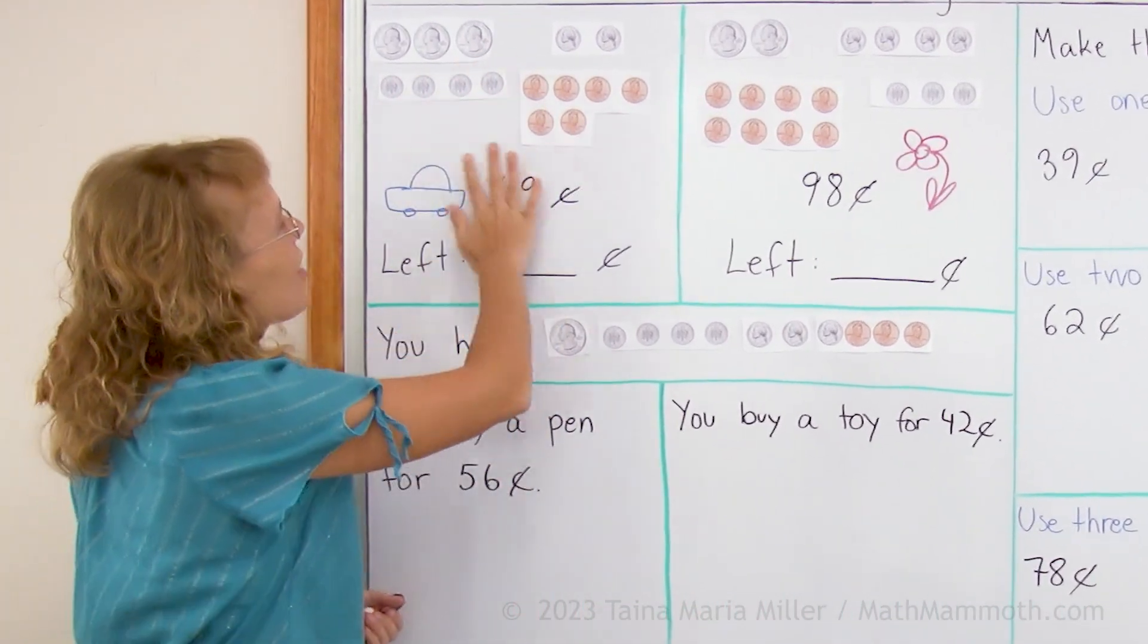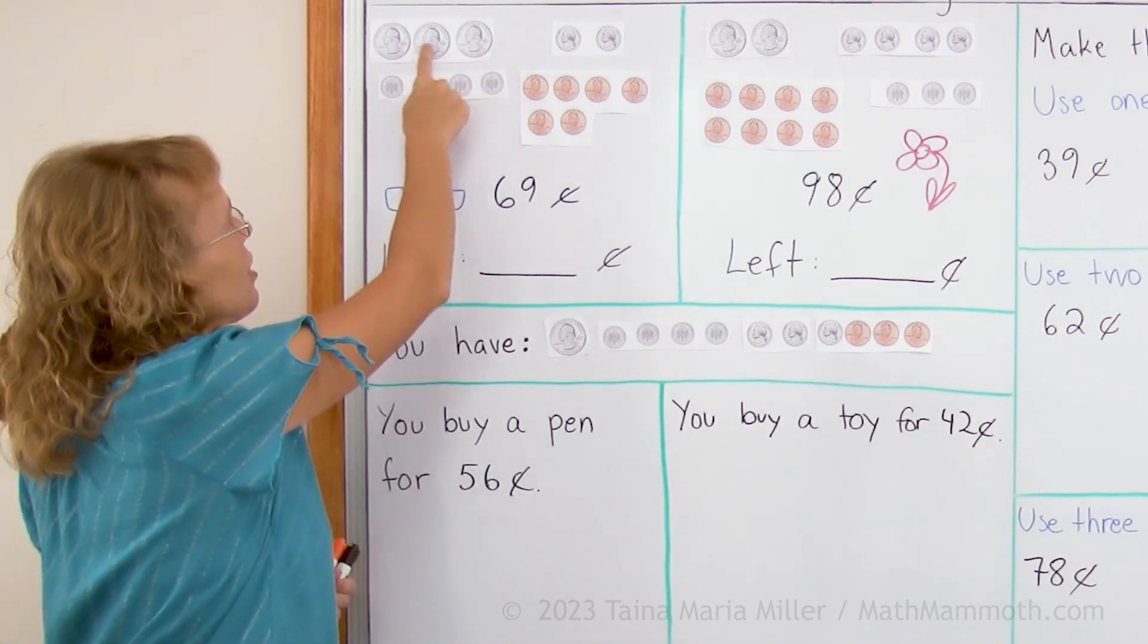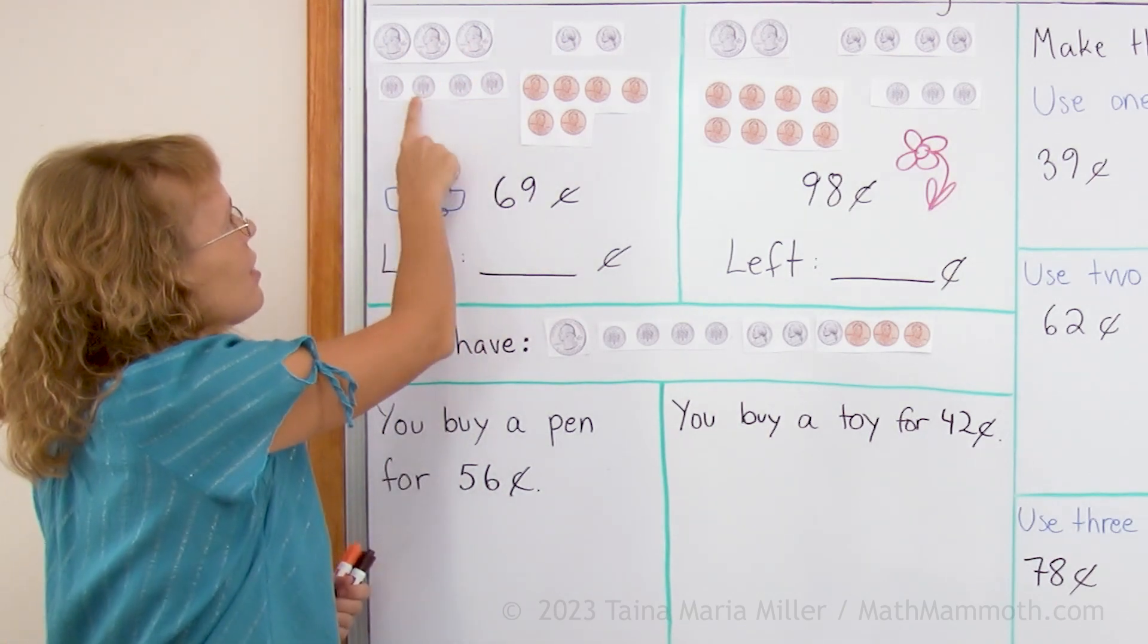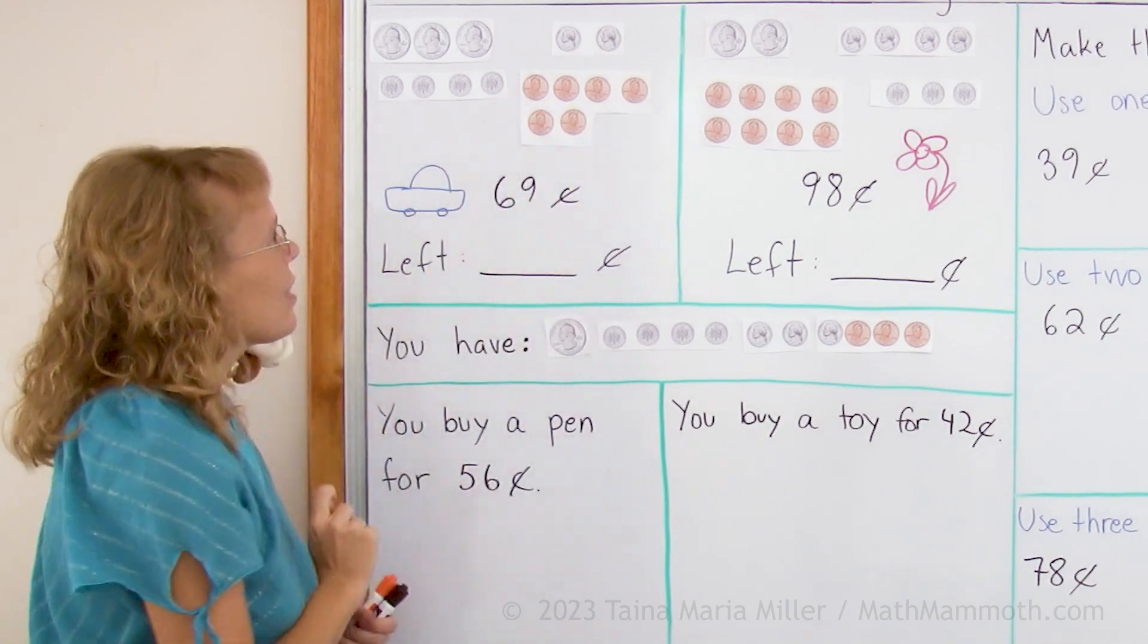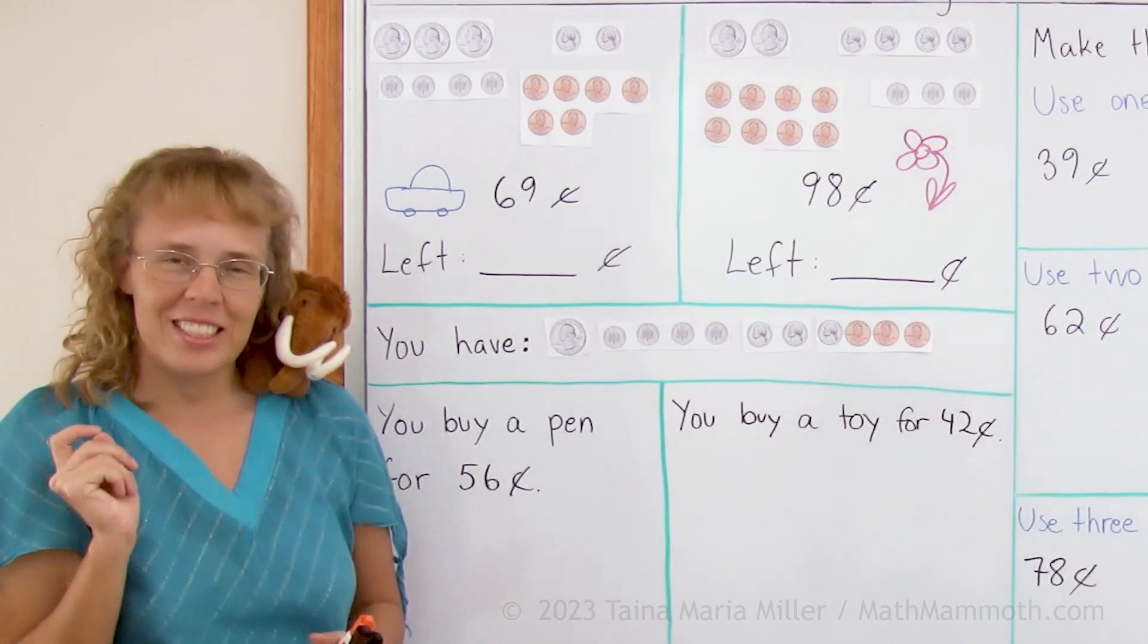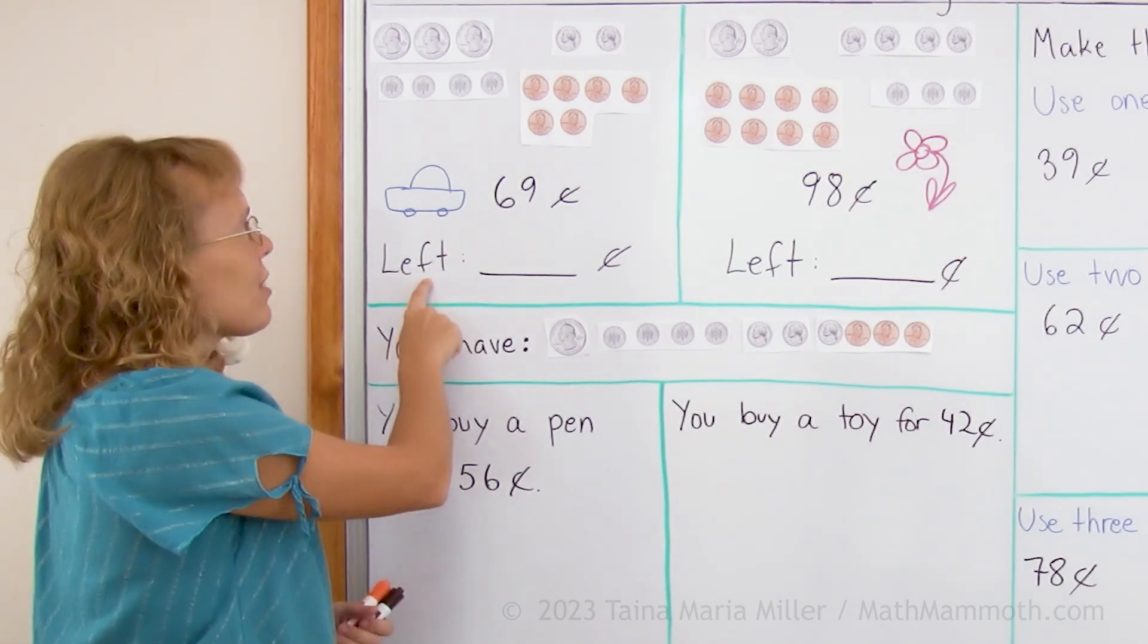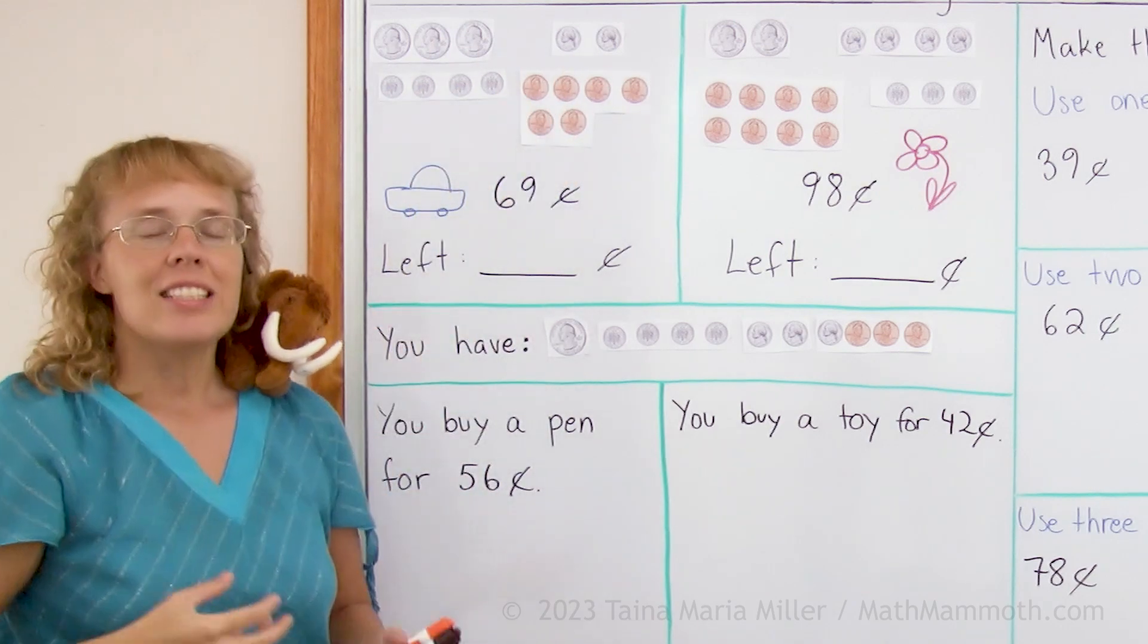First of all, here's pictures of money. I hope you can see them clearly. We have quarters here, dimes here, nickels here and pennies here. Let's say that's the money you have and you're gonna buy this little toy car for 69 cents. So how much will you have left? This is your money, 69 cents.